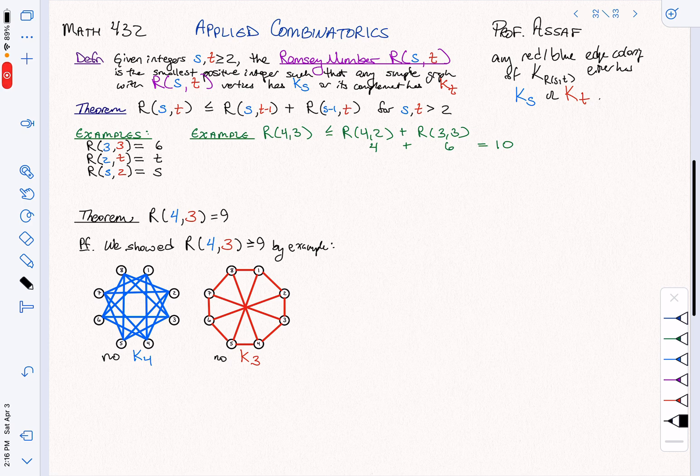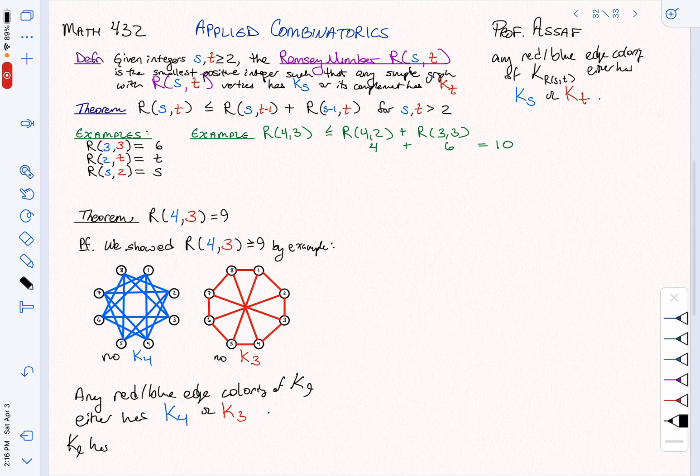So how are we going to prove that? Unlike the example we did for the bound, in order to prove that it's equal to 9, what we have to do is prove that no matter how we construct K9, any red-blue edge coloring of K9 either has K4 all blue or K3 all red. Now how many red-blue edge colorings are there? Well, K9 has 9 choose 2 edges. How many edges is that? That's 36.